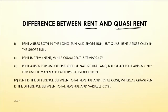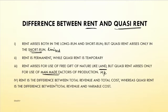Now let us look at the differences between rent and Quasi Rent. First, rent arises in both long run and short run, but Quasi Rent arises only in the short run, because in the short run the supply of factors other than land is limited. Second, rent is a permanent phenomenon, but Quasi Rent is temporary as it occurs only in the short run. Third, rent arises from free gifts of nature like land, but Quasi Rent arises only on man-made factors of production like machinery. Fourth, rent is the difference between Total Revenue and Total Cost, whereas Quasi Rent is the difference between Total Revenue and Total Variable Cost.